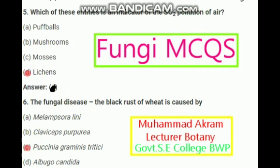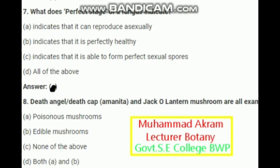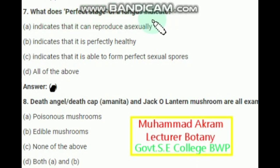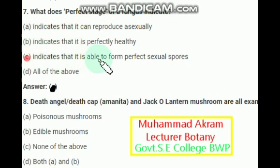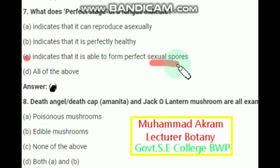What does the perfect stage of a fungus indicate? It indicates — option C — that it is able to form perfect sexual spores, called the perfect stage.